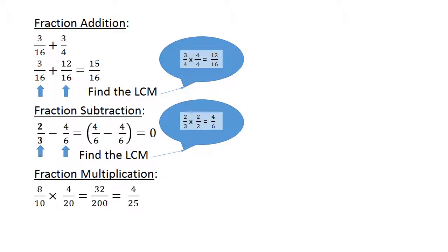Fraction multiplication. 8 over 10 multiplied by 4 over 20 is equal to 32 over 200. You multiply the top part of your fraction. 8 times 4 is equal to 32. And 10 times 20 is equal to 200. This is equal to 4 over 25, the simplest form of the fraction.